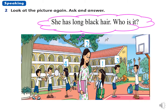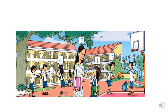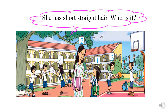She has long black hair. Who is it? Yes, it's number one, V. Next. She has short straight hair. Who is it? Great. It's number four, me.